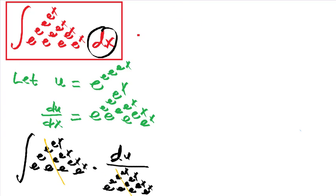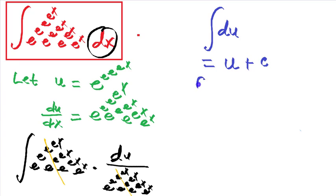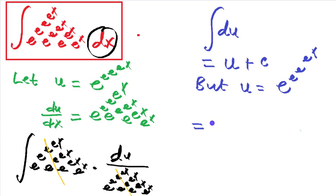Now we have the integral of du, and we know that this equals u plus a constant. Since u is e to the e to the e to the e to the x, the final answer is e to the e to the e to the e to the x plus a constant. This is our final solution.